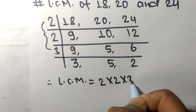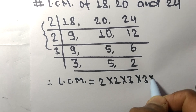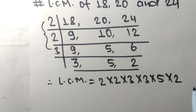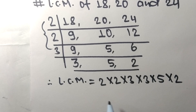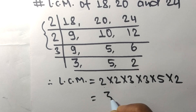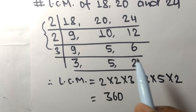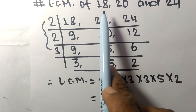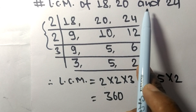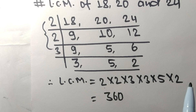From the left side it is 2 times 2 times 3, and from the remaining side it is 3 times 5 times 2. By multiplying all these numbers we get 360. So 360 is the LCM of 18, 20, and 24. Thanks for watching.